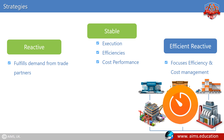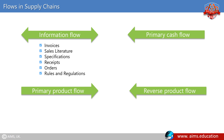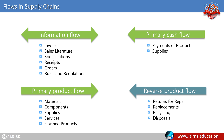There are four flows in supply chains. Information flow includes invoices, sales literature, specifications, receipts, orders, and rules and regulations. Primary cash flow includes payments of products and supplies. Primary product flow includes materials, components, supplies, services, and finished products. Reverse product flow includes returns for repair, replacements, recycling, and disposals.